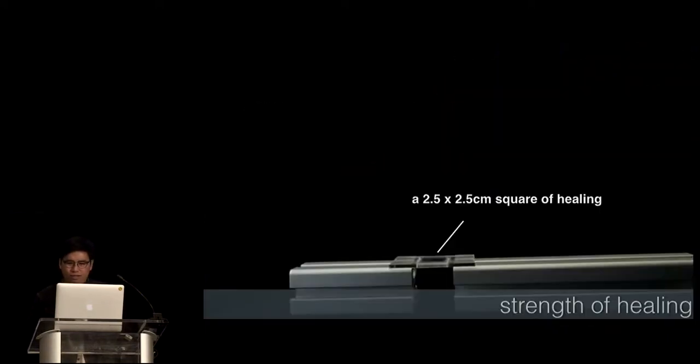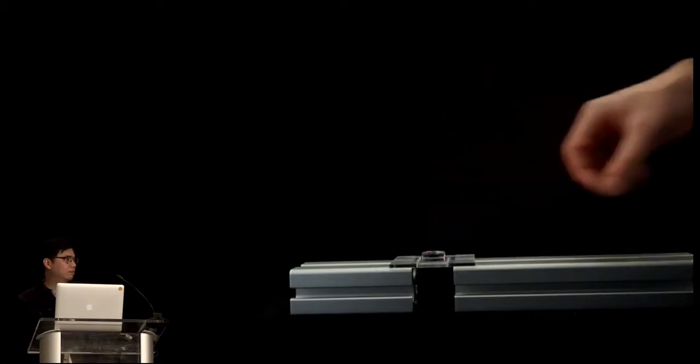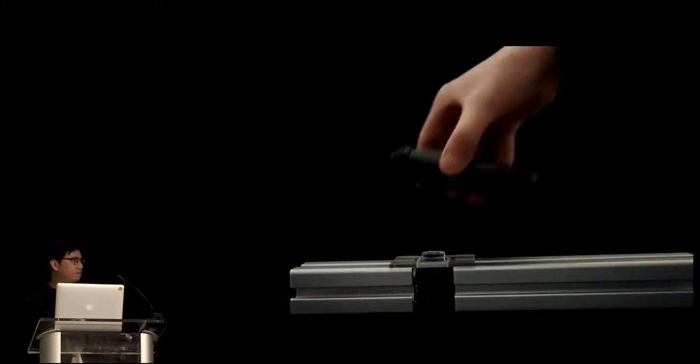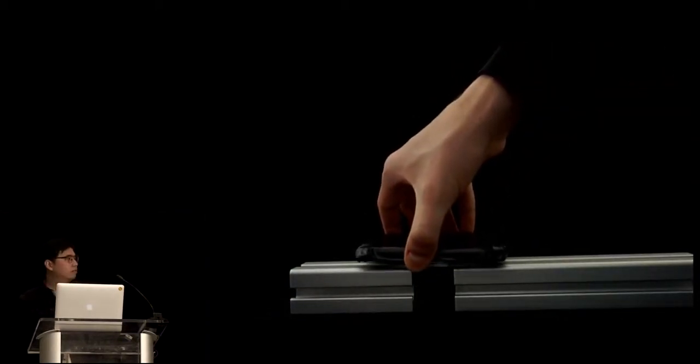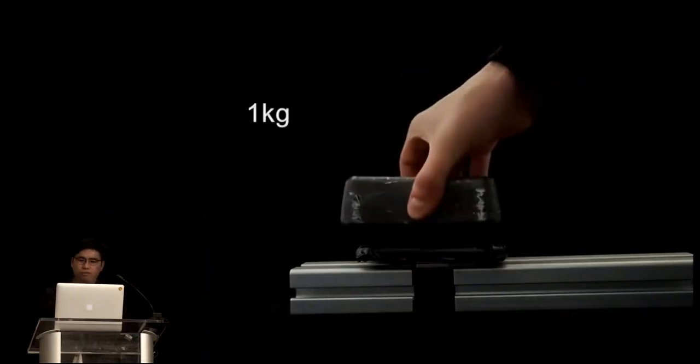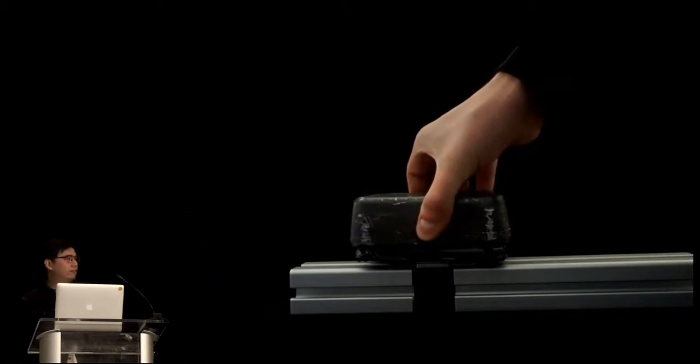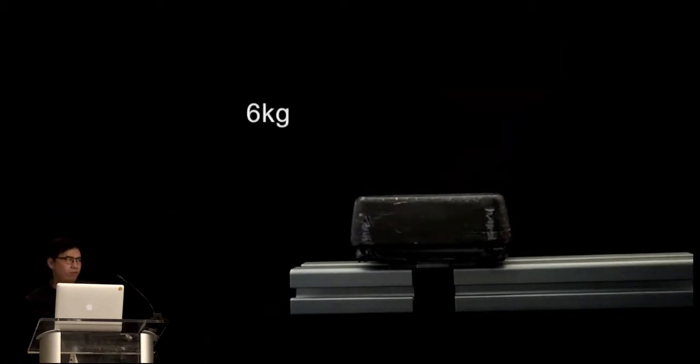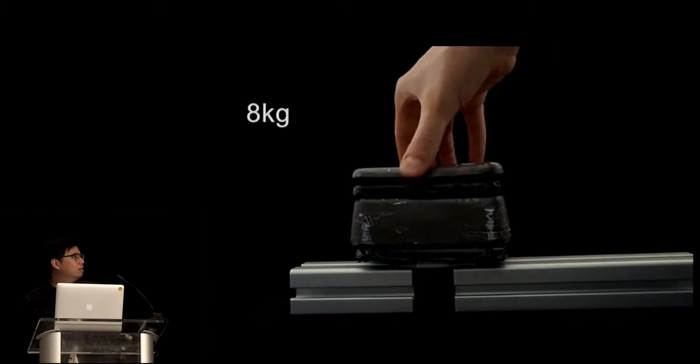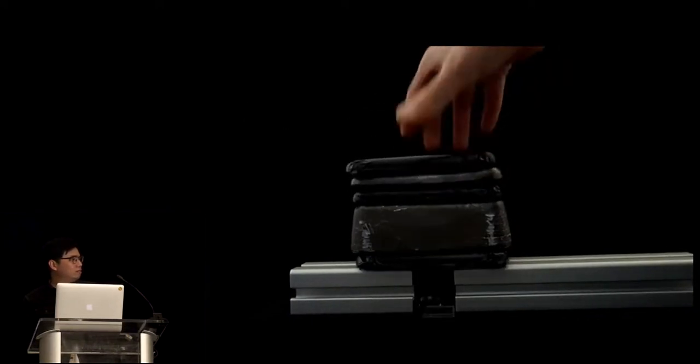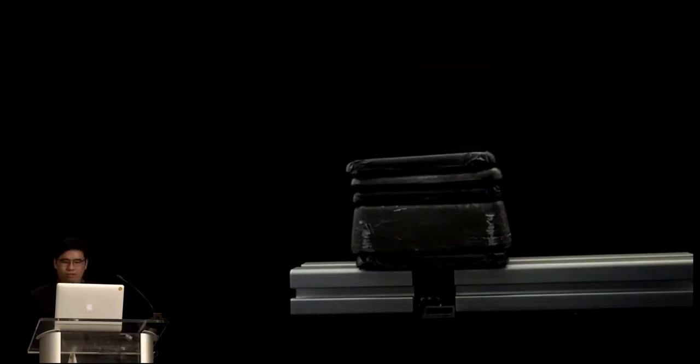And about the strength of healing. So, again, we cut, then heal a 2.5 by 2.5 centimeter square from the plates. Then, we start adding weights onto it. Okay. And we keep repeating the process 10 times. And on average, this 2.5 by 2.5 centimeter square can support approximately 8 kilograms. Now, when this one is put on, it breaks over there.